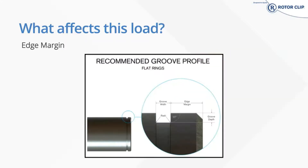Another thing to consider is edge margin. To ensure that PG listed in the catalog is appropriate, the shaft or housing must have enough material to back up the groove wall. The distance between the groove wall and the edge of the shaft is the edge margin, known as Y. With D being the groove depth, if the edge margin is three times the groove depth, the groove can withstand the maximum thrust listed in the catalog. If Y over D is less than three, a scaling factor should be used. This isn't a linear scaling factor — it's based on a graph in the back of our catalog, so that's where to refer in that case.